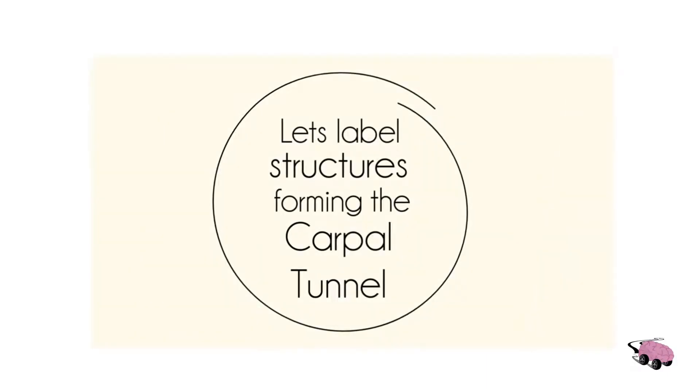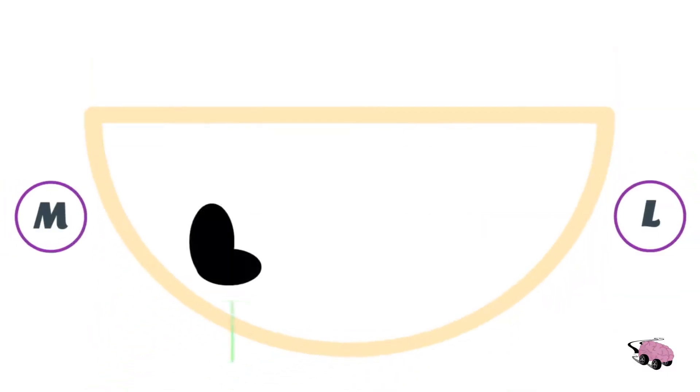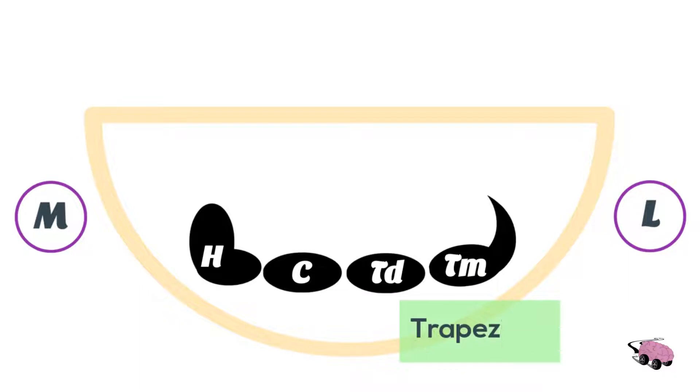Now, let's label the structures forming the carpal tunnel. First one is hamate, H for hamate. C for capitate. Td for trapezoid. Tm for trapezium. Next is the roof of the carpal tunnel, which is called the flexor retinaculum.